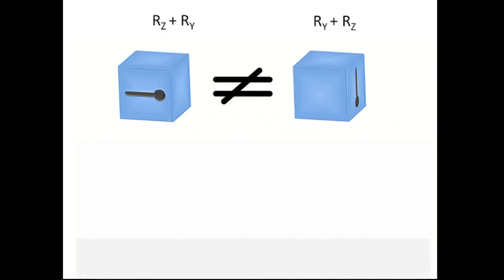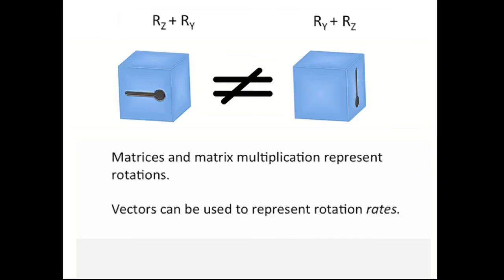You'll learn it's better to use matrices and matrix multiplication to represent combinations of rotation. The tricky thing is that a vector can be used to describe rotation rate and time derivative of a rotation quite well.